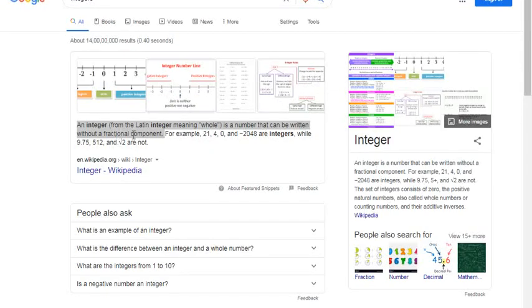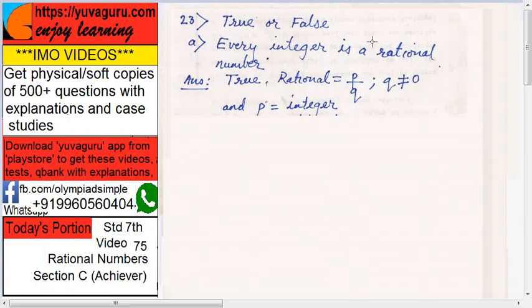Even 0 is an integer. So let's say 1 - 1 means 1 upon 1. So what is a rational number? p upon q where q is not equal to 0 and p and q are integers. Right? So 1 can be written as 1/1, 10 can be written as 10/1.